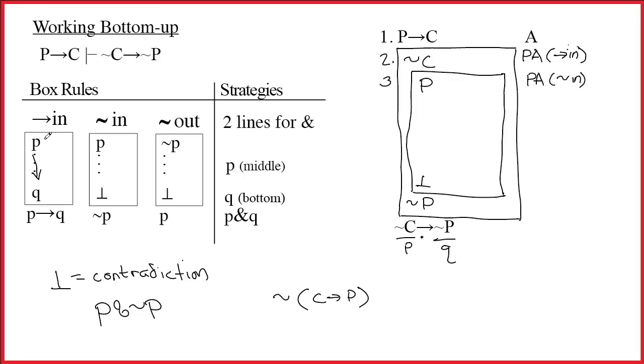When you're doing arrow in, you're showing that P leads to Q. When you're doing tilde in or tilde out, you're showing that your assumption leads to a disaster. If something leads to a disaster, well, then it can't be the case. So if P leads to a disaster, P must be false. If not P leads to a disaster, well, then P must be true.